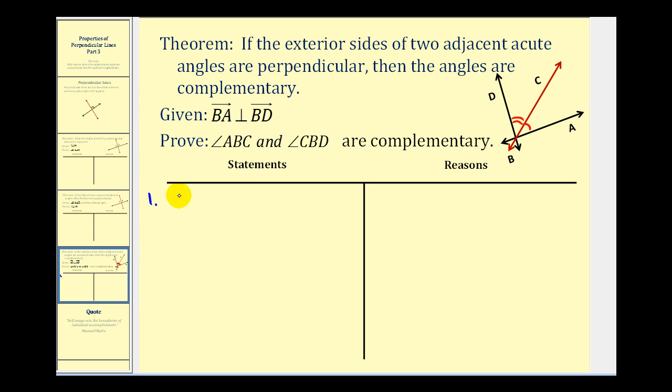Step one will be the given: ray BA is perpendicular to ray BD. That's given. If these two rays are perpendicular, angle ABD must be a right angle, and the reason for this would be by definition of perpendicular lines. This tells us that the measure of angle ABD equals 90 degrees, and this is by definition of a right angle.